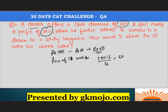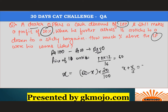Since the cost price is x and he makes a profit of 20 percent, x plus x by 5 equals 60, which gives x equals rupees 50. That is the correct answer — the cost price is rupees 50.